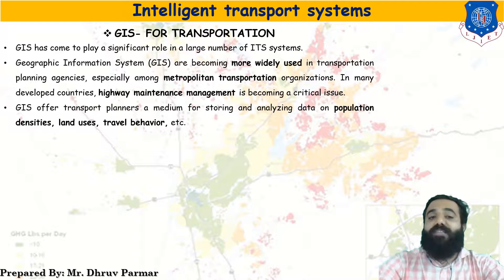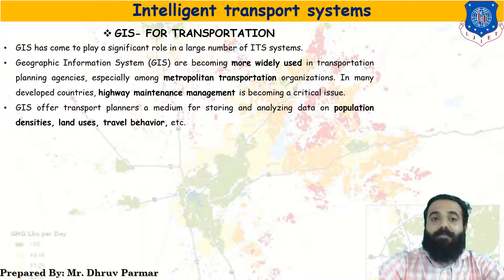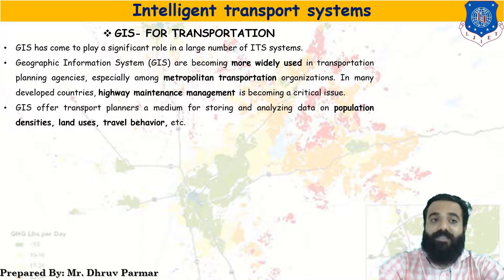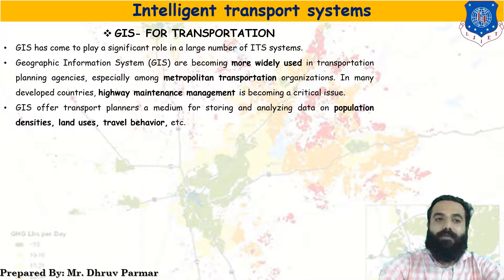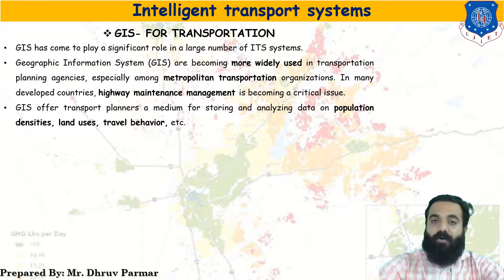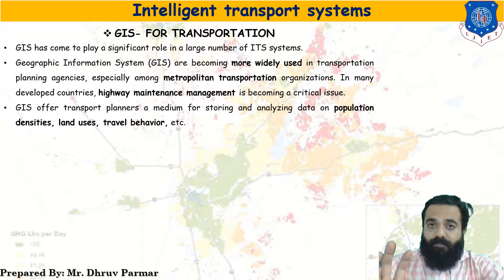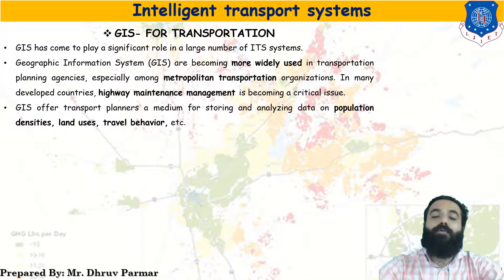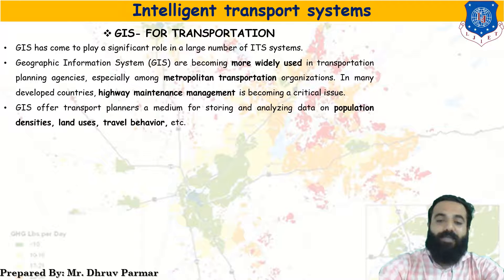GIS offers transport planners a medium for storing and analyzing data on population densities, land use, and travel conditions. It is very important to predict, plan, and support transport planning. So GIS is a very important tool to describe, analyze, and plan transportation.